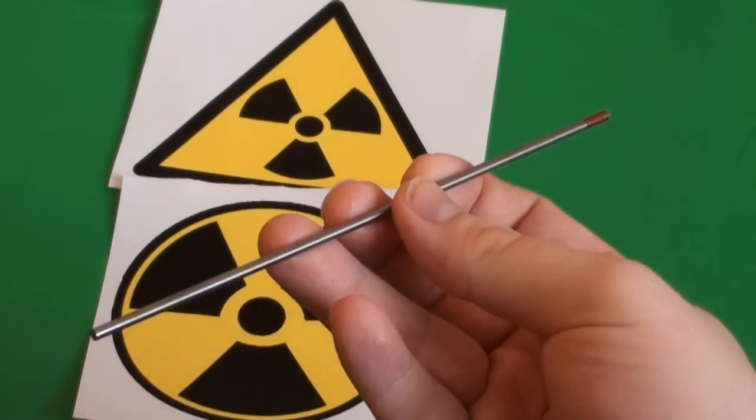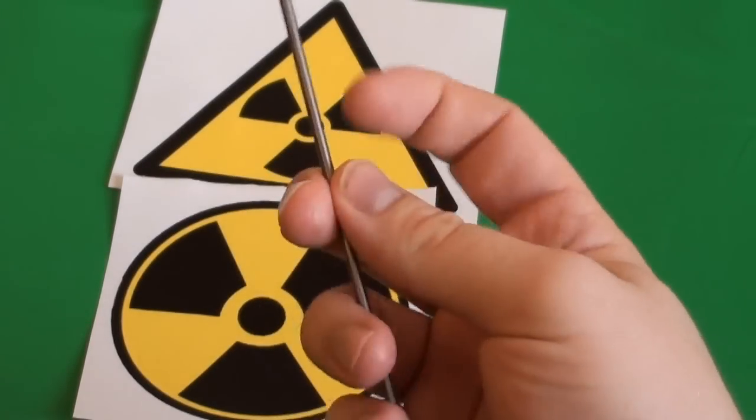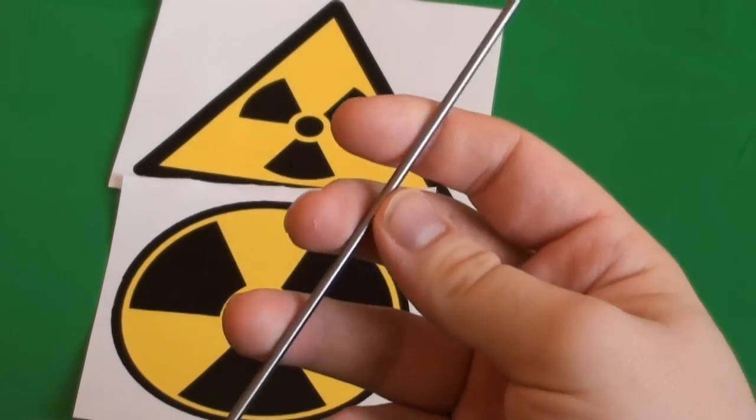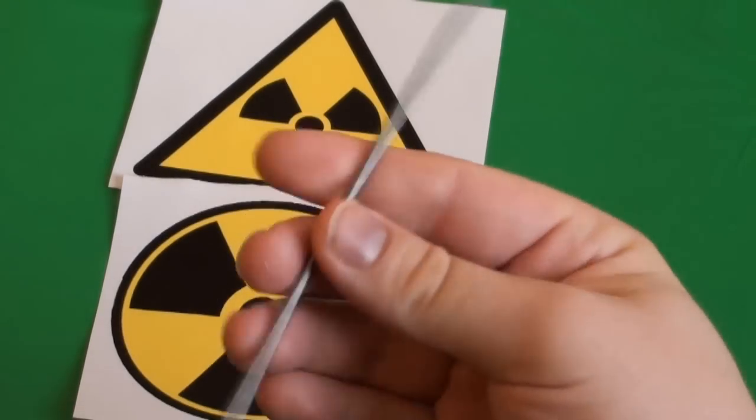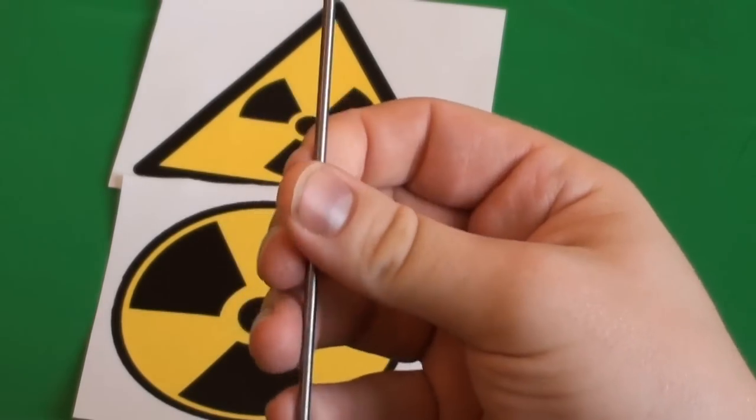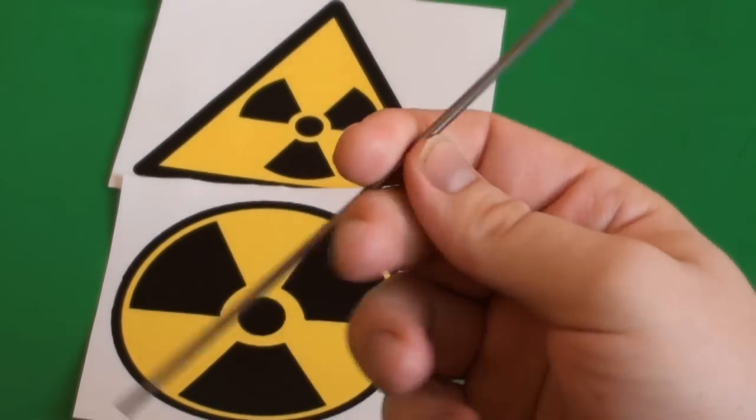Well, this is a welding electrode which is composed of tungsten and thorium. The thorium is the radioactive part and it contains around 2% thorium. So it's not that highly radioactive.